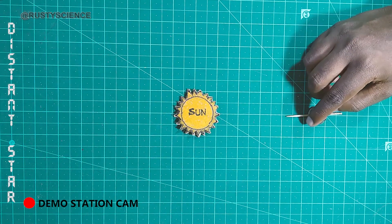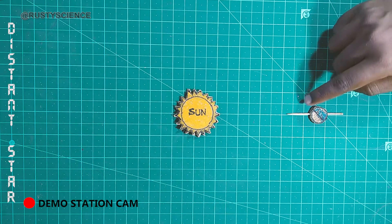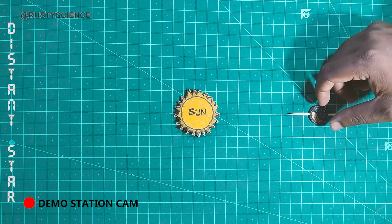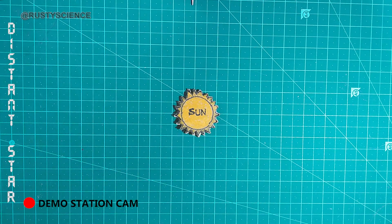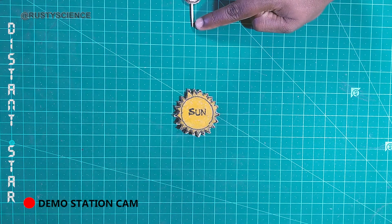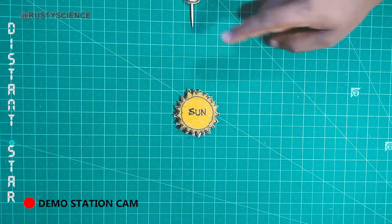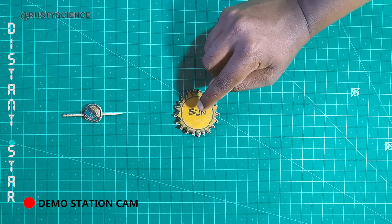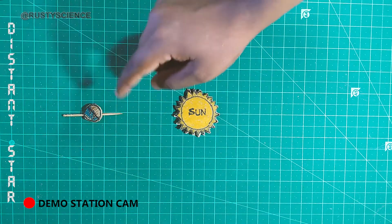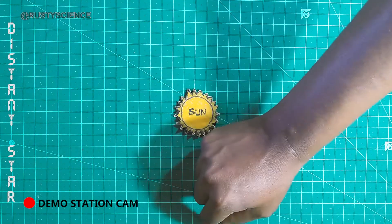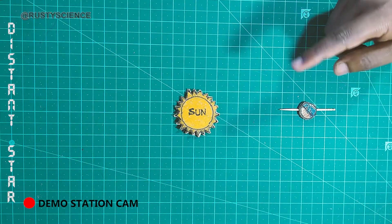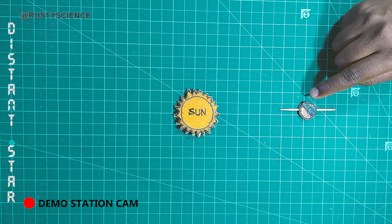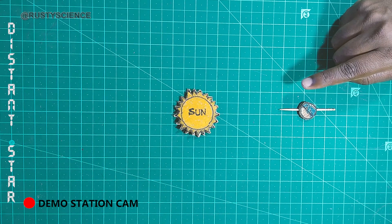Now imagine Earth is not spinning at all — it only orbits the Sun. In that case, it always points toward the Sun. But look at what happens with respect to the distant star: after a quarter orbit, Earth has already drifted 90 degrees. After half an orbit, 180 degrees. After three-quarters, 270 degrees. After a full orbit, Earth has completed 360 degrees with respect to the distant star — without a single rotation! That means one extra day has been counted.